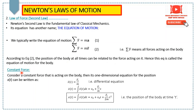Consider a constant force Fc acting on a body. Its one-dimensional equation for position can be written as ẍ = Fc/m. This is a differential equation with the second derivative of x with respect to t. Taking the integration once, we get ẋ(t) = v₀ + (Fc/m)·t. Taking the integration again, we get x(t) = x₀ + v₀·t + (Fc/2m)·t². This gives the position of the body at any time t.